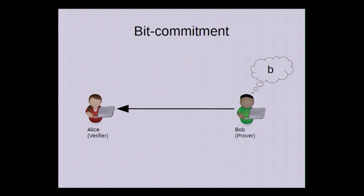A bit commitment scheme is a cryptographic primitive that's used, for example, in zero-knowledge proofs and multi-party computation.